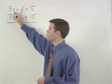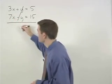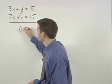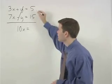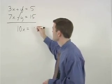On the left, 3x plus 7x is 10x, and on the right, 5 plus 15 is 20.